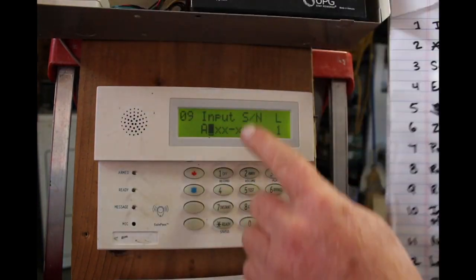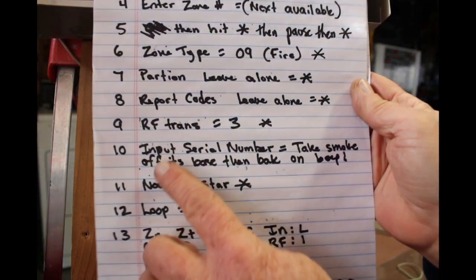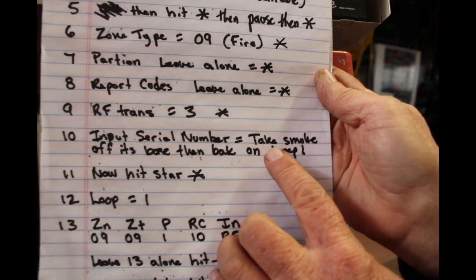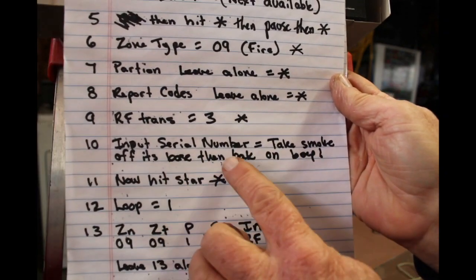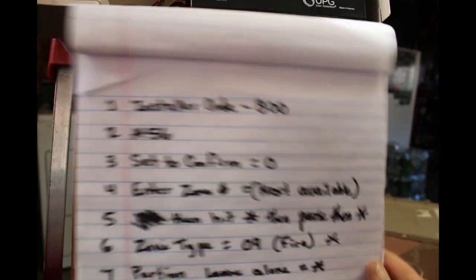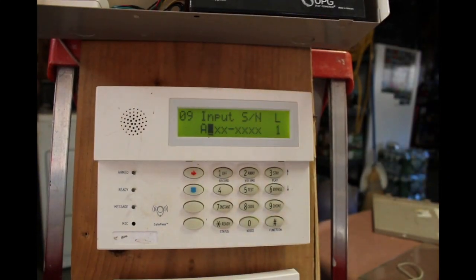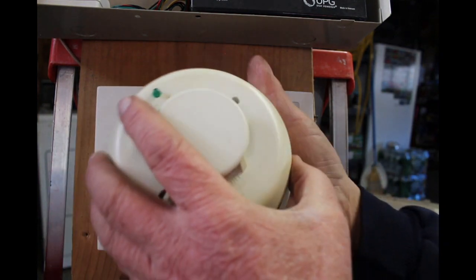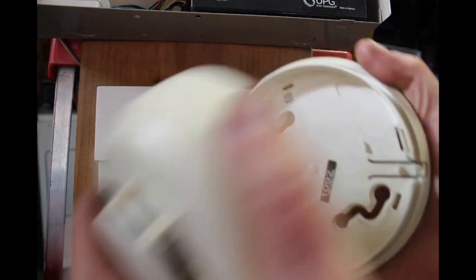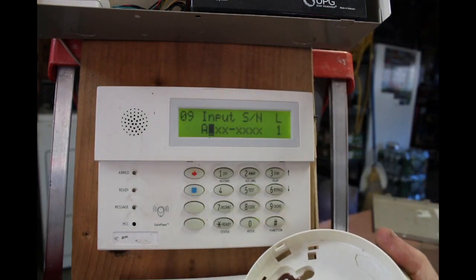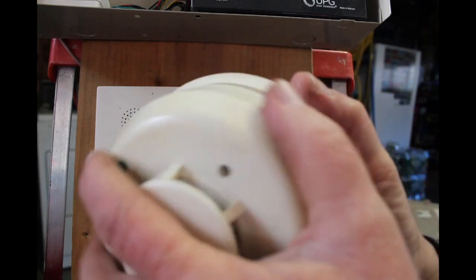All right, now it says input the serial number. Input the serial number: it says take the smoke detector off its base and then back on. All right, so let me just get this out of the way and I'm going to bring the smoke detector in frame. Now I'm going to take it off, wait a second, and then put it back on.